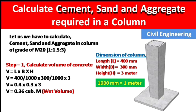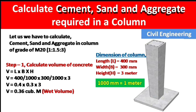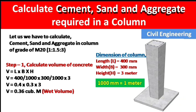Let us see the step-by-step procedure. In Step 1, we calculate the volume of concrete required to prepare this column. To calculate the volume of the column, we multiply L × B × H. We are calculating the volume of this column only, not including the footing.